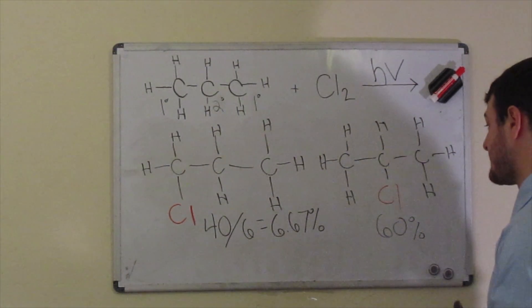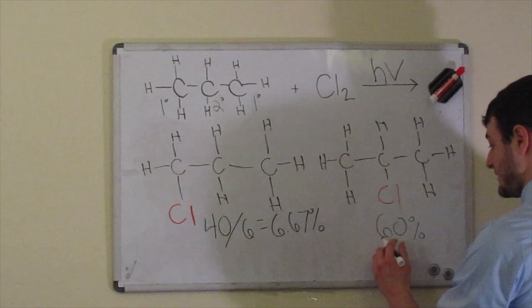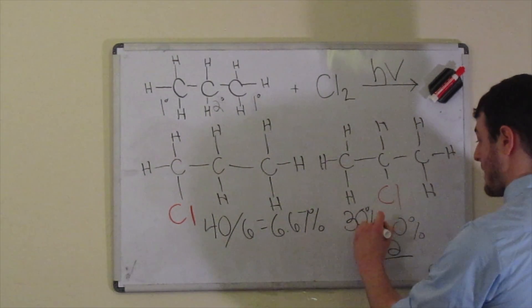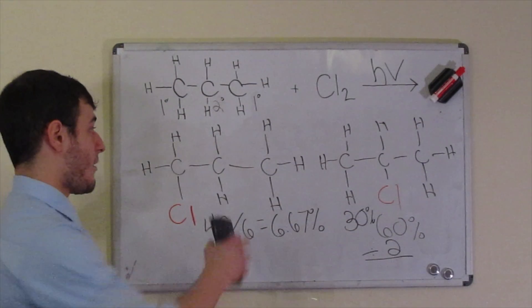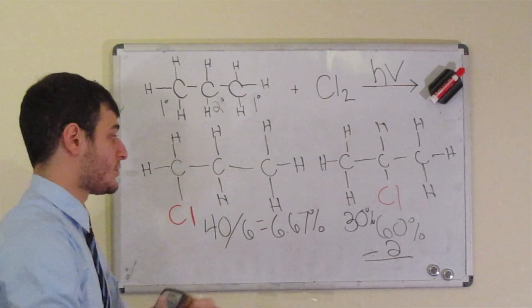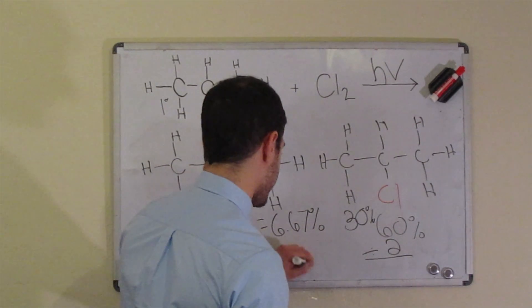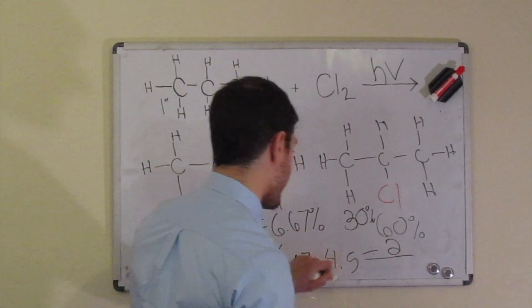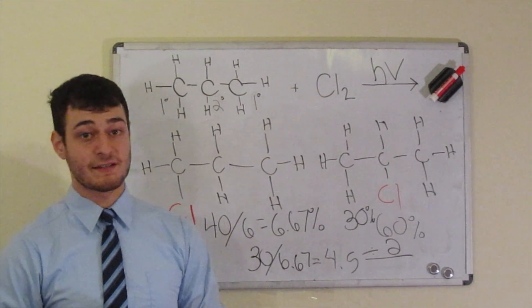Now we're going to look over at the secondary hydrogens. So if you notice, there's only two of those. So if this sort of substitution happens 60% of the time, if we divide it amongst the two of them, we're going to see that this happens 30% of the time for each of these hydrogens. So when you're comparing relative reactivities, you're comparing how often the secondary individual hydrogens react to the primaries. So you're comparing these two numbers here. So if you wanted to say how much more reactive the secondary is, you could do 30 divided by 6.67, and they're both in percent, it's unitless, and we get 4.5. So we can say that the secondary hydrogens are 4.5 times as reactive as the primary hydrogens.